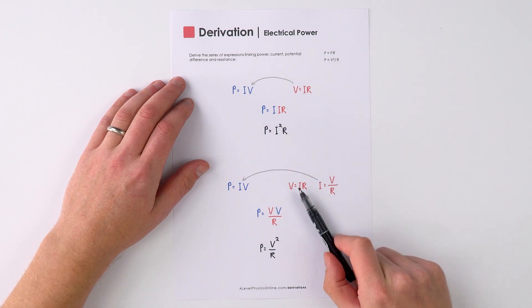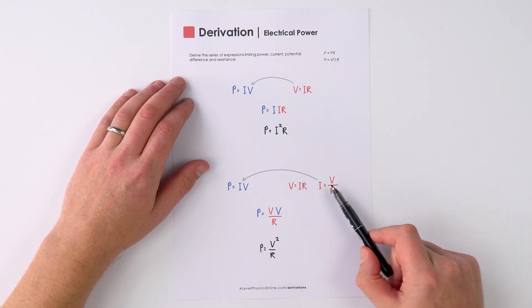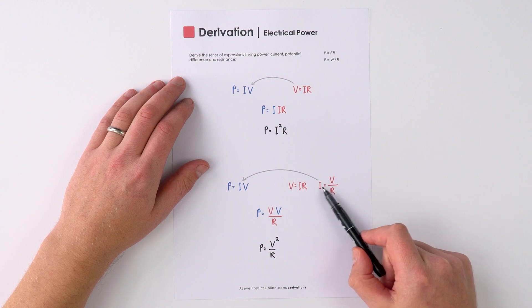We can do something very similar, but this time if we were to rearrange V equals IR to make I the subject, I is equal to V over R.